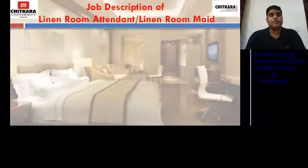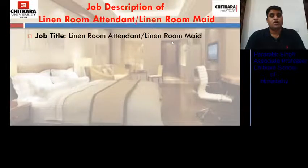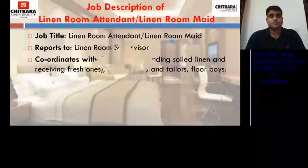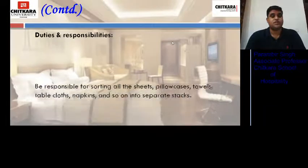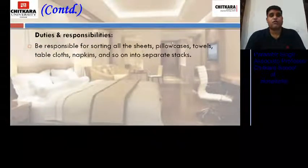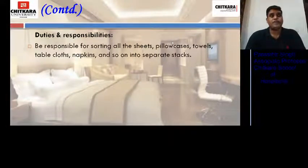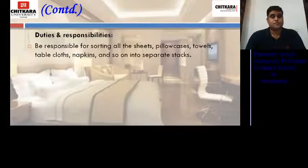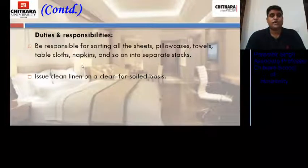Job description of the linen room attendant. He reports to the linen room supervisor and coordinates with the laundry for sending soiled linen and receiving fresh ones, as well as with upholsterers, tailors, and floor boys. He is responsible for sorting all sheets, pillowcases, towels, tablecloths, napkins, and so on, ensuring each linen type is kept separate so the laundry staff does not find it difficult for washing. There is a proper exchange procedure on a clean-for-soil basis.